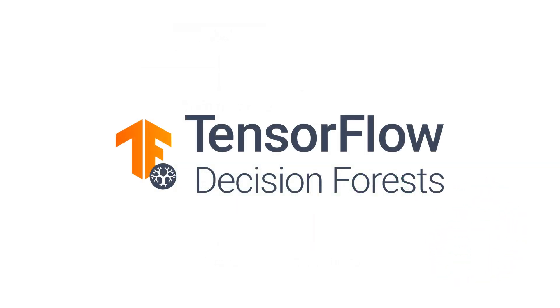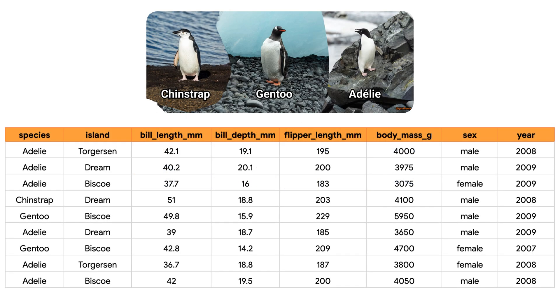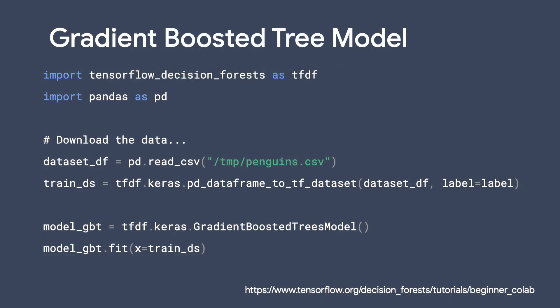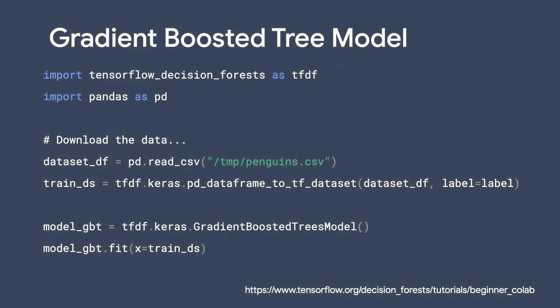Let's see how to create a gradient-boosted tree model using the TensorFlow Decision Forests library. For simplicity, let's use the same dataset from the previous video, the Palmer's Penguin dataset. The code for importing dependencies, loading data, and splitting into training and test is identical from the previous video where we trained a random forest model. So I'll save you time and go straight to the new content: creating a gradient-boosted tree.